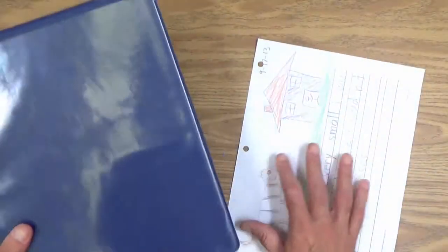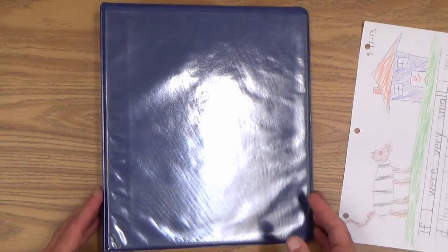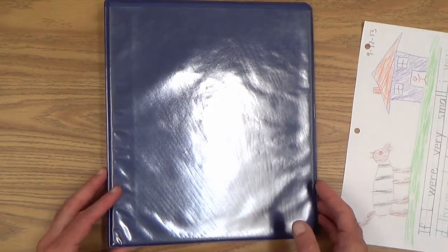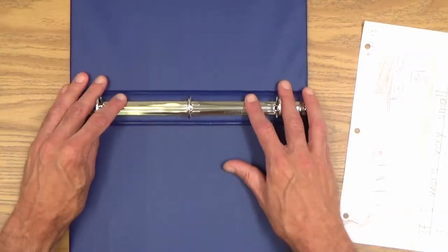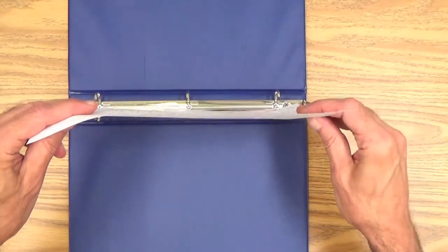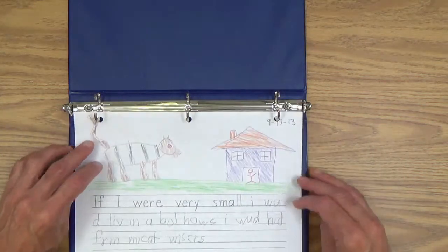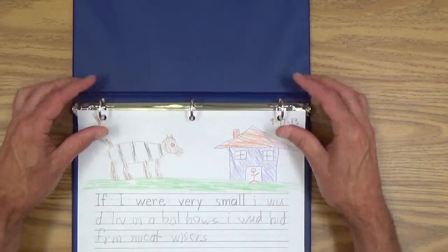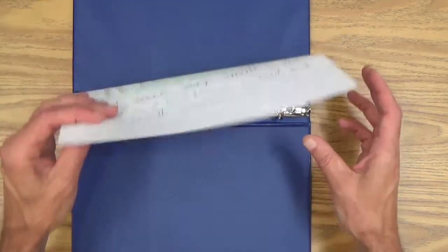And here's a binder, a nice blue binder. Of course, your child can choose any color he or she likes. So, we'll open up the binder like this horizontally and place the page right in the binder. And these pages will be put in in chronological order. So, the next one will go behind it and so on and so forth.